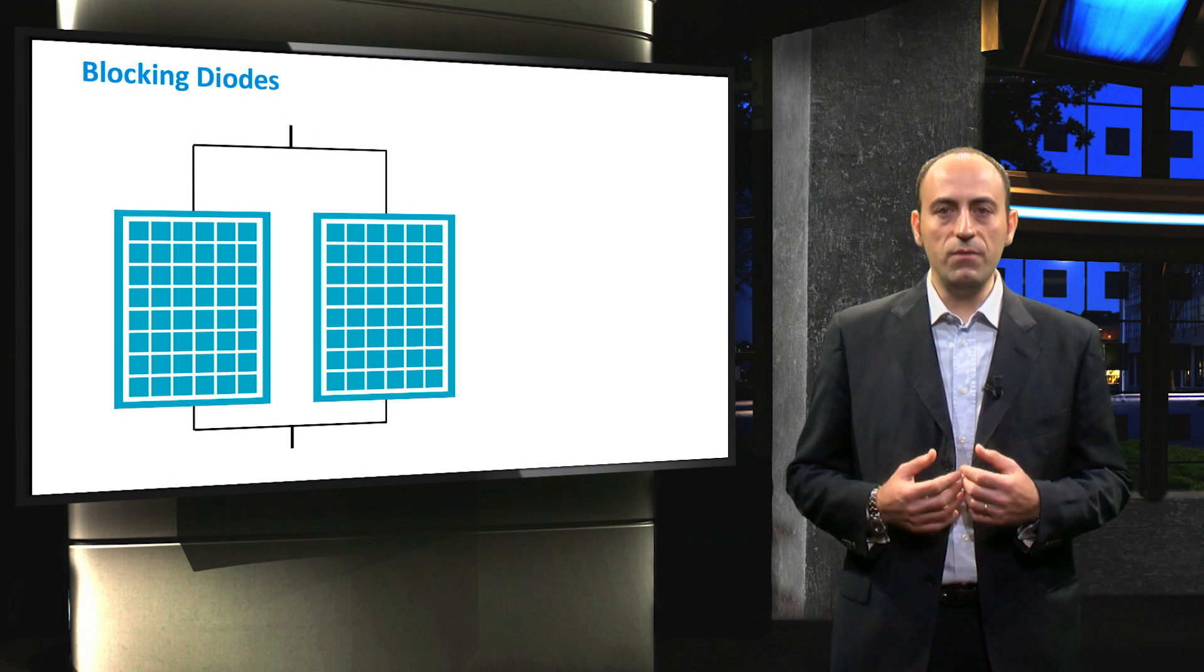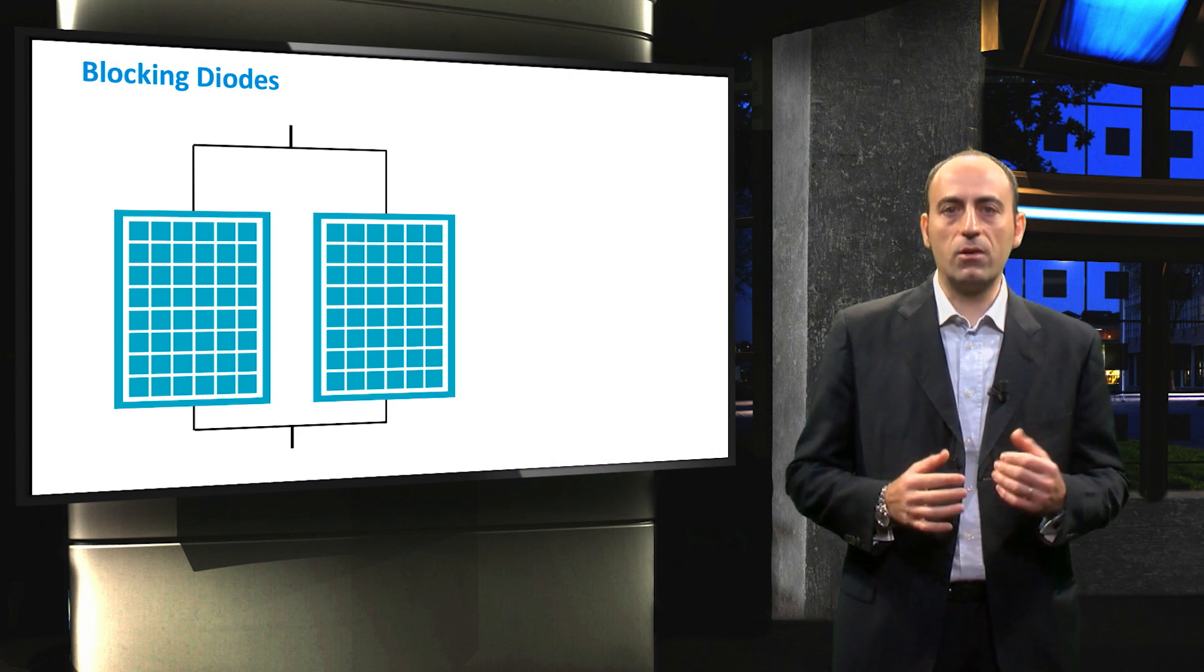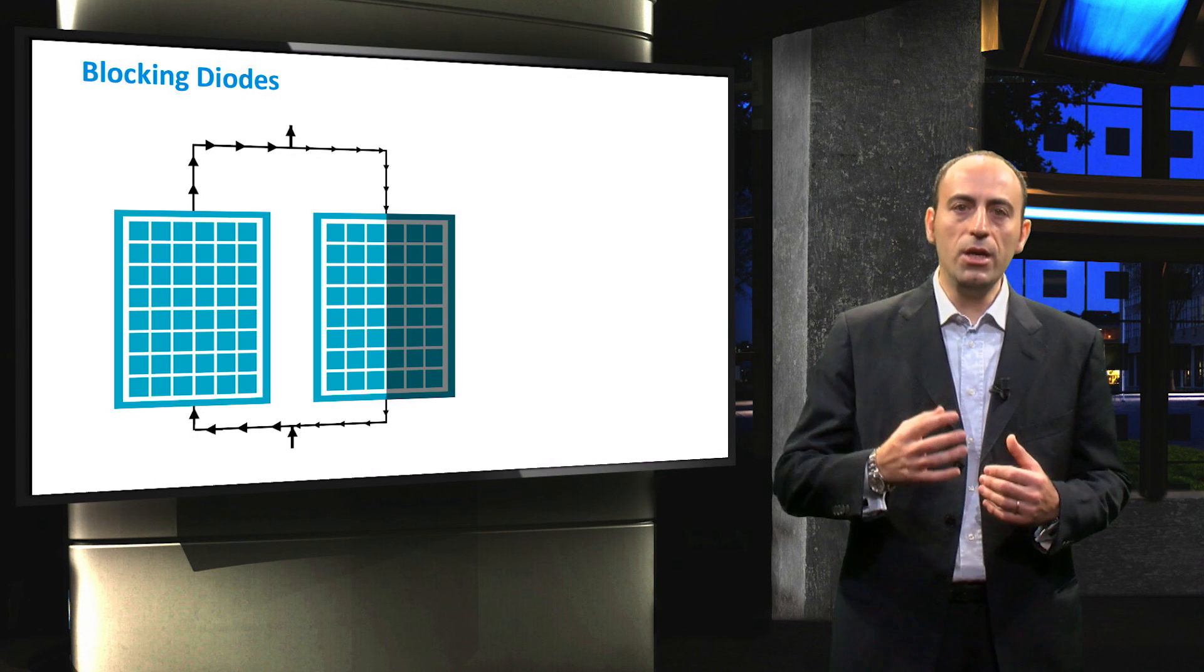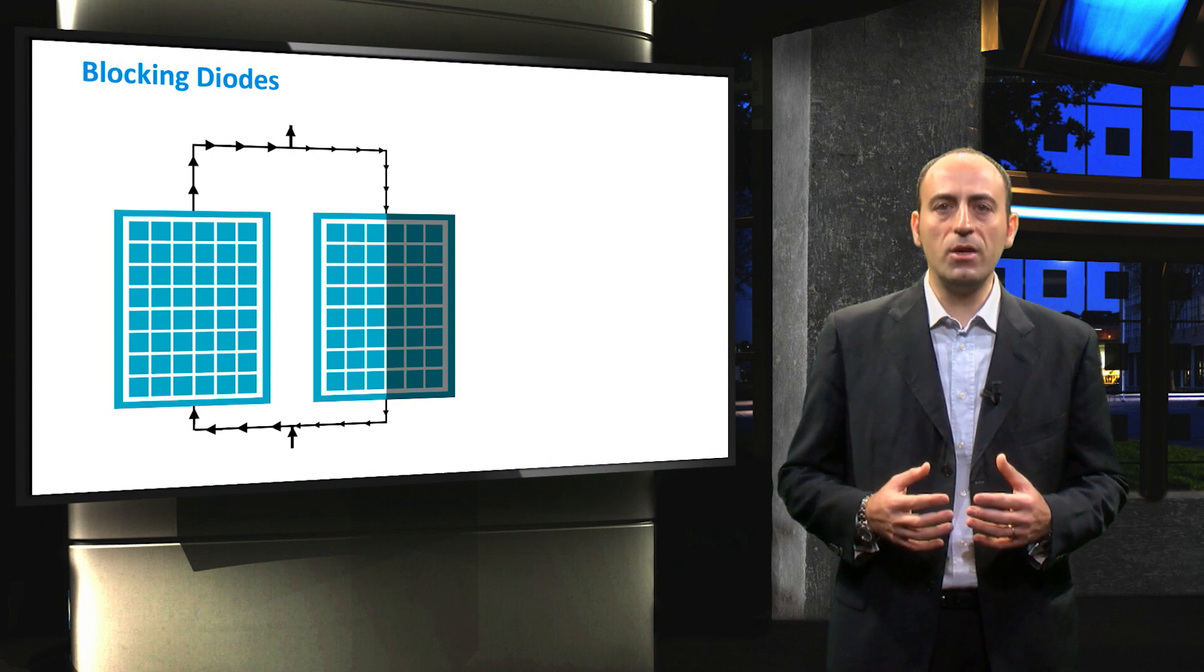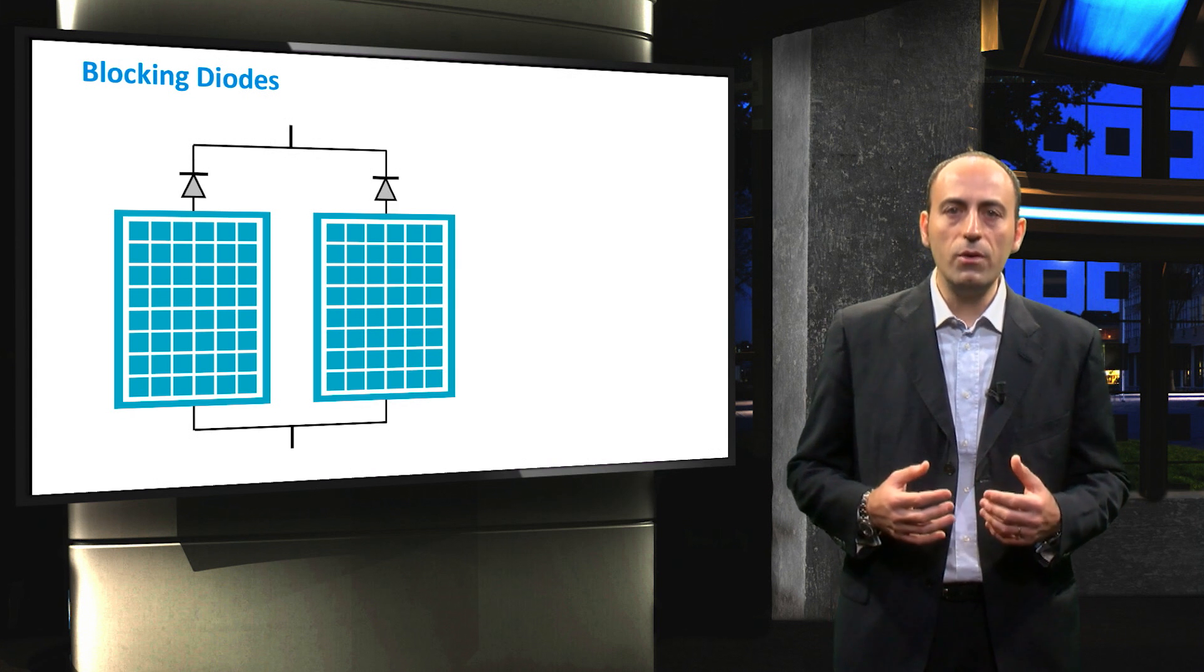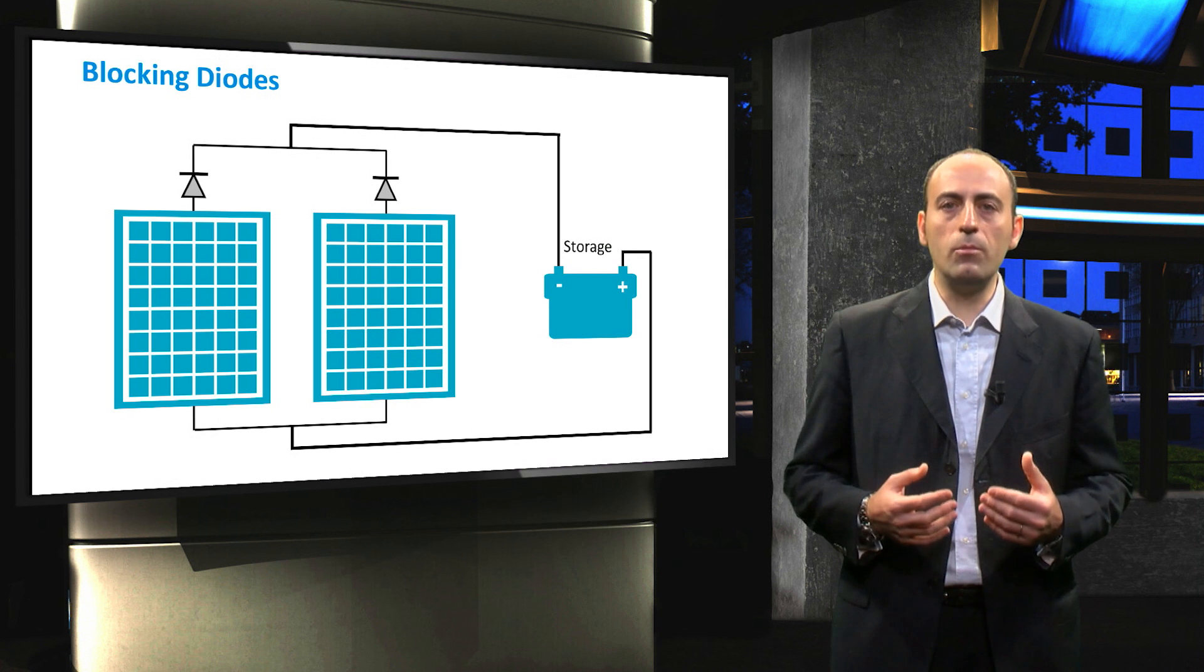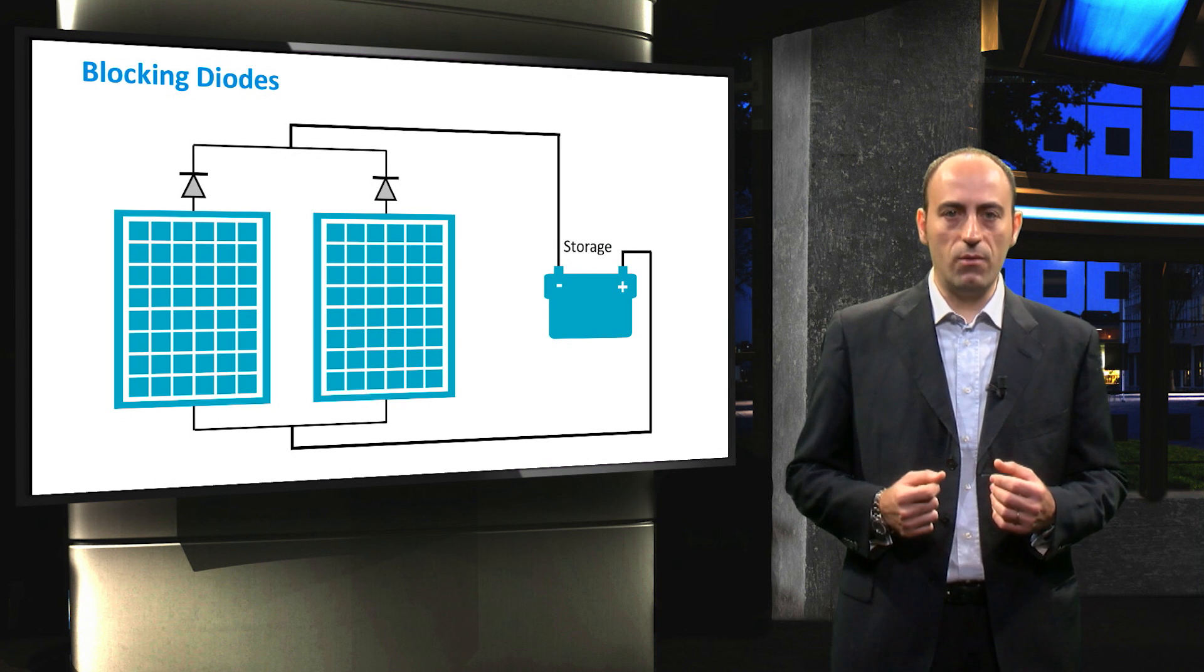The last topic of this video is the blocking diode. It is used in parallel connected strings or modules in order to prevent current flowing from one parallel string into a lower current string due to partial shading. Therefore, each string to be connected in parallel should have its own blocking diode. Moreover, in systems with batteries, blocking diodes are typically employed to prevent the module from loading the battery at night by preventing current flow from a battery through the PV array.